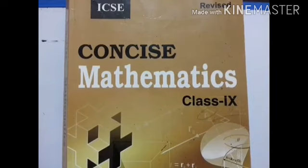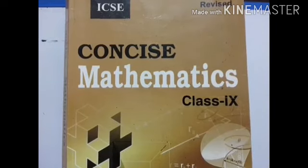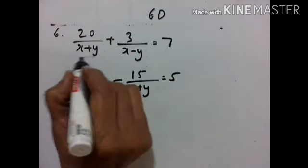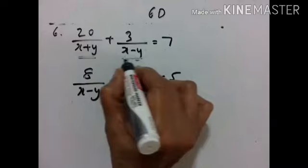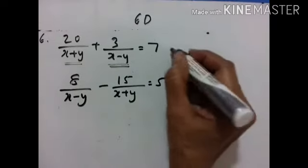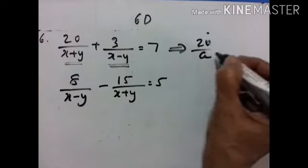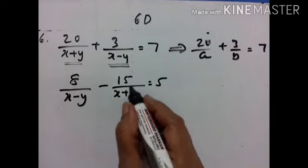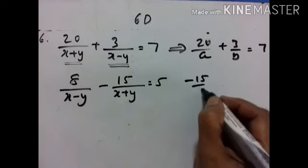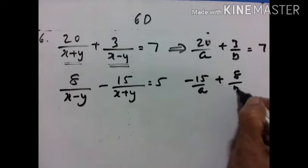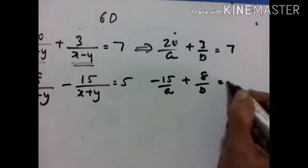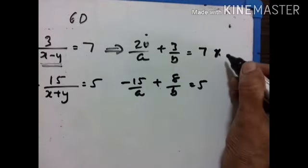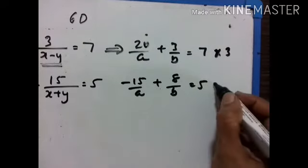Hello students, welcome back. Let's continue with Exercise 6D, Concise Mathematics 9th class. Let's go to the sixth problem. Let us take x plus y as a and x minus y as b. So what happens here: 20 upon a plus 3 upon b is equal to 7, minus 15 upon a plus 8 upon b is equal to 5. Let us multiply this equation by 3 and this equation by 4.